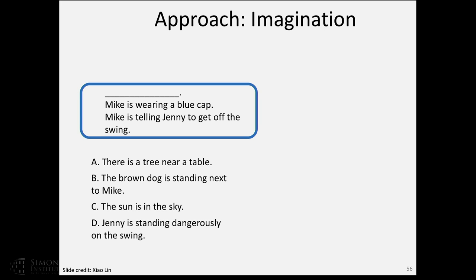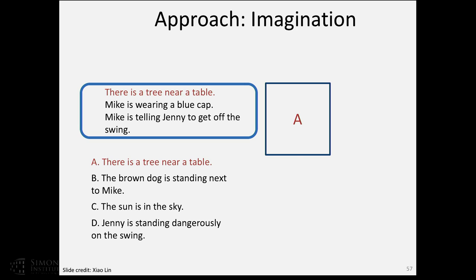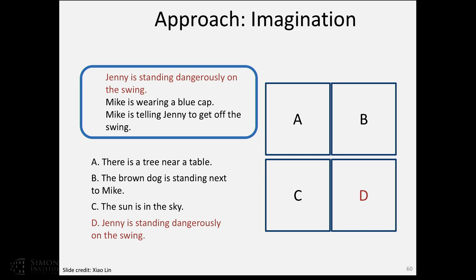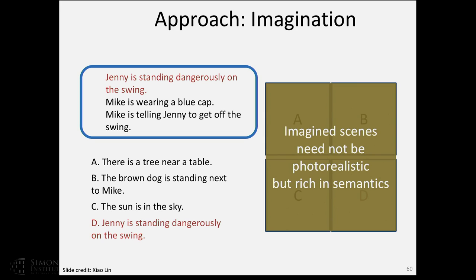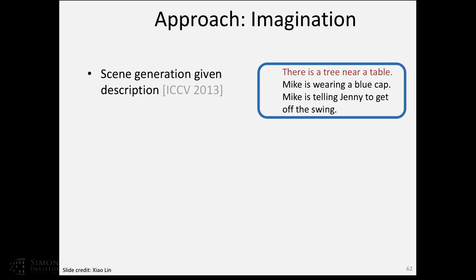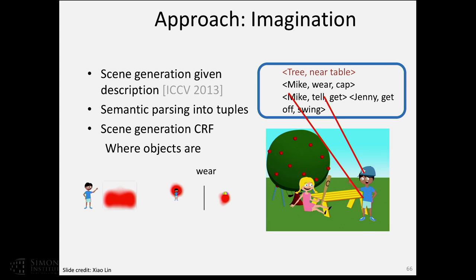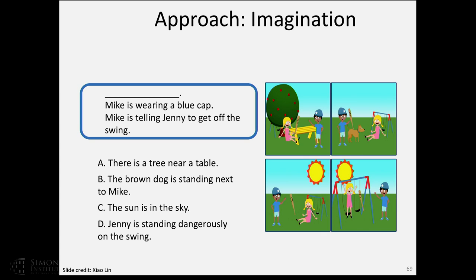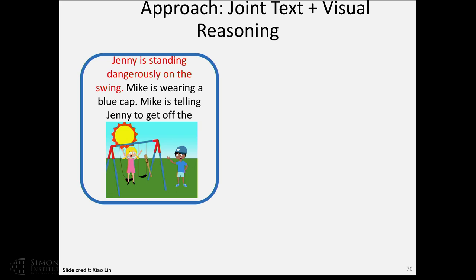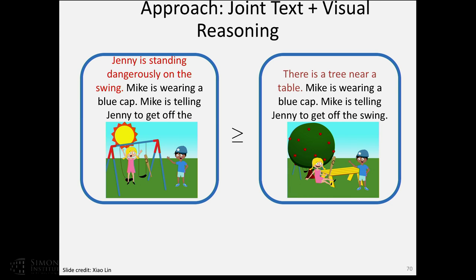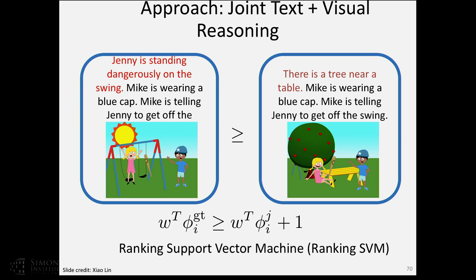My argument is that instead of explicit reasoning — when you're angry you throw things, and to throw something you have to hold it — if you just imagine the scene, you will imagine someone throwing something and automatically imagine them holding it. If you imagine the scene underlying the text and reason about similarities in scene space, in addition to reasoning in text space, you might do better. So for fill-in-the-blank, we plug each option into the description, generate scenes for all four options using the Mike and Jenny world, and train a ranking model that extracts features from both the scene and the text.